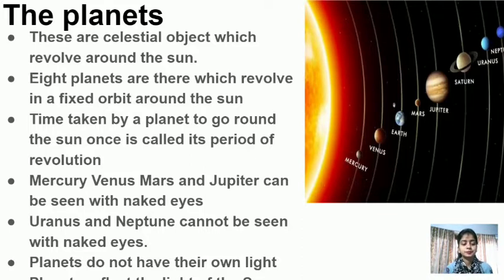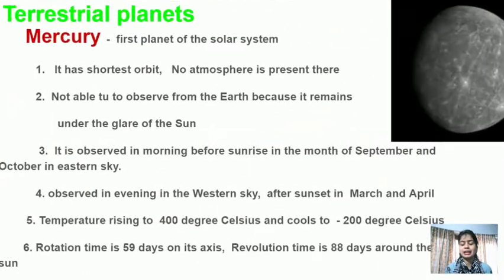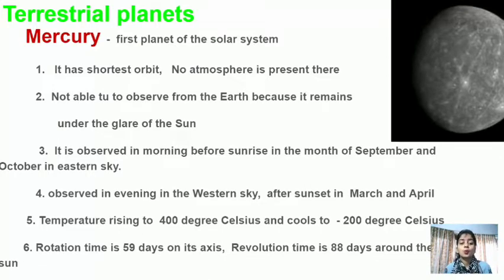Planets do not have their own light; they reflect the light of the Sun. There are two types of planets: terrestrial planets and jovian planets. Terrestrial planets range from Mercury to Mars, and jovian planets range from Jupiter to Neptune.